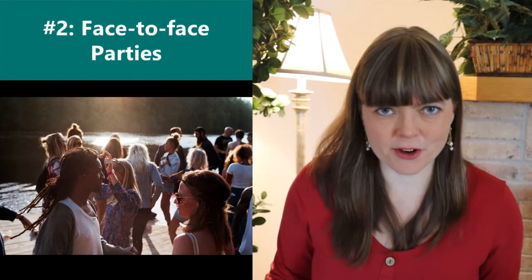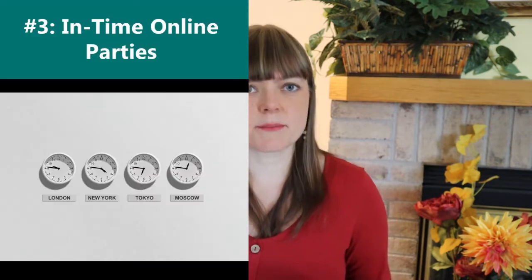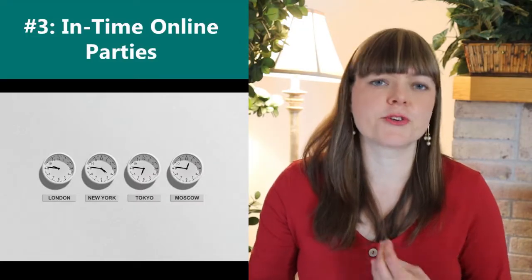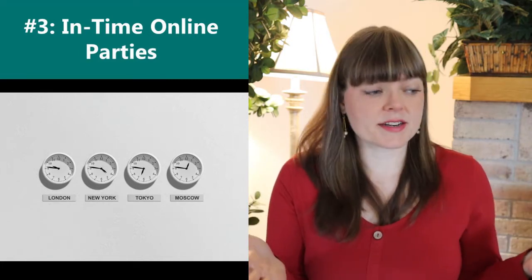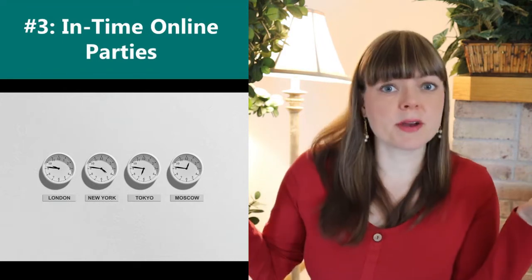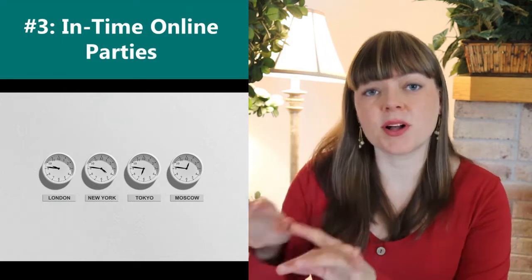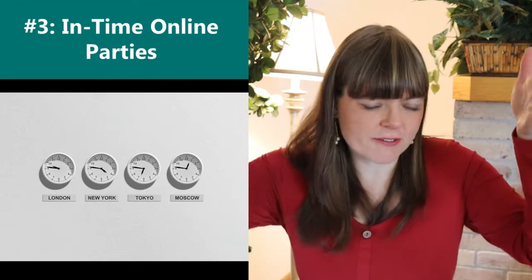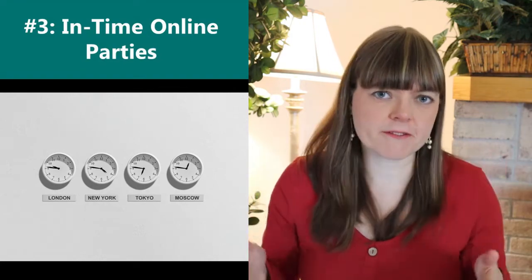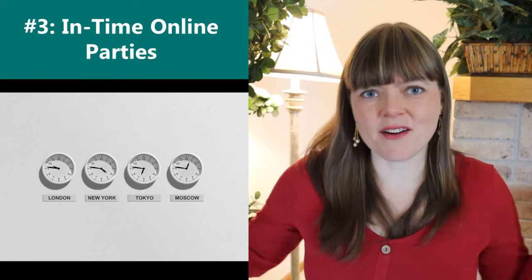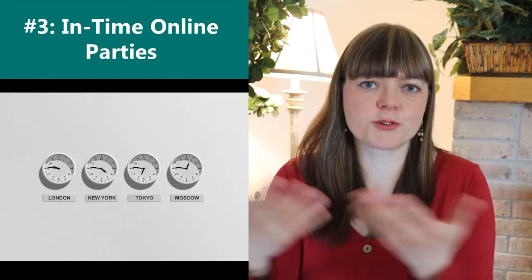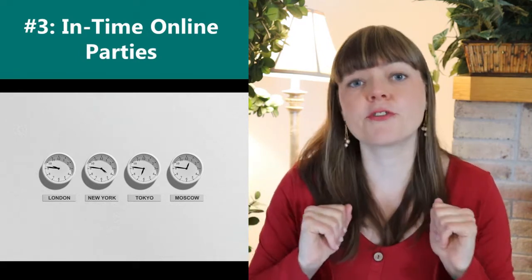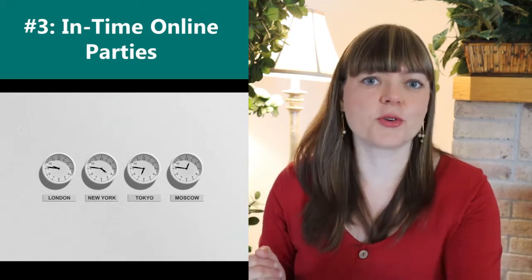The third mechanism is similar, except you don't have to show up to face-to-face parties. Instead, you show up online — maybe on Zoom — and there's a short window of time, like 15 minutes, where wherever you are in the world, you show up and do what is required to prove your identity. If you complete that in the time frame, you get a key.